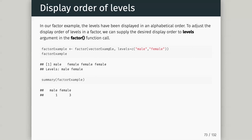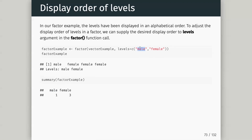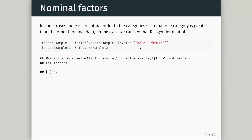In the factor example the levels are just displayed in alphabetical order. We need to adjust these sometimes — for ggplot and complex graphics we need control over levels. We can set the levels up front when we create the factor by providing the levels argument. Here I specify levels as male then female, and now if I do a summary the male comes first.